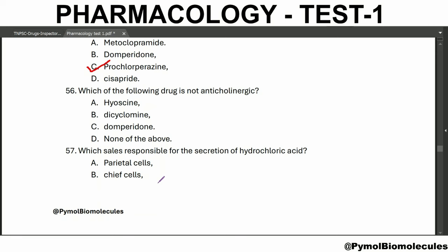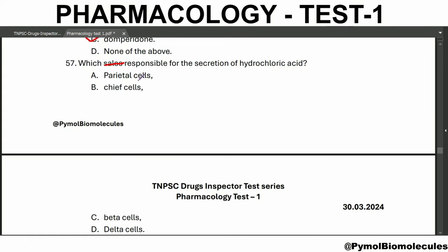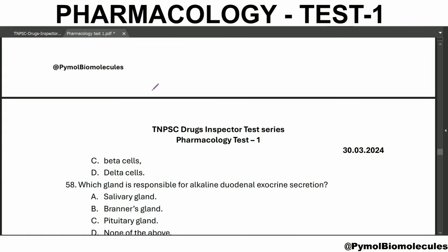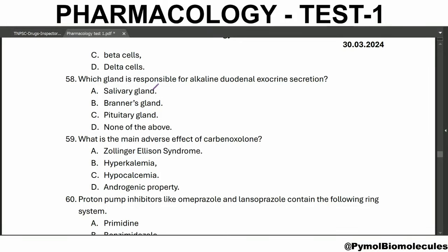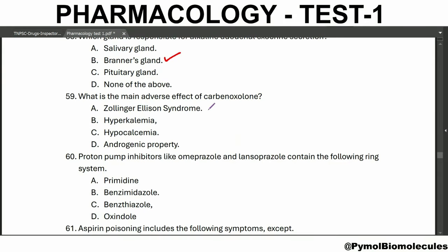Which of the following drugs is not anticholinergic? Domperidone. Hyoscine and dicyclomine are the anticholinergic drugs. Which cells are responsible for the secretion of hydrochloric acid? Parietal cells. Chief cells secrete pepsinogen. Which gland is responsible for alkaline duodenal exocrine secretion? Brunner's gland. What is the main adverse effect of carbenoxolone sodium? Hypokalemia. In Zollinger-Ellison syndrome, the drug of choice is omeprazole. Carbenoxolone is the derivative of liquorice.